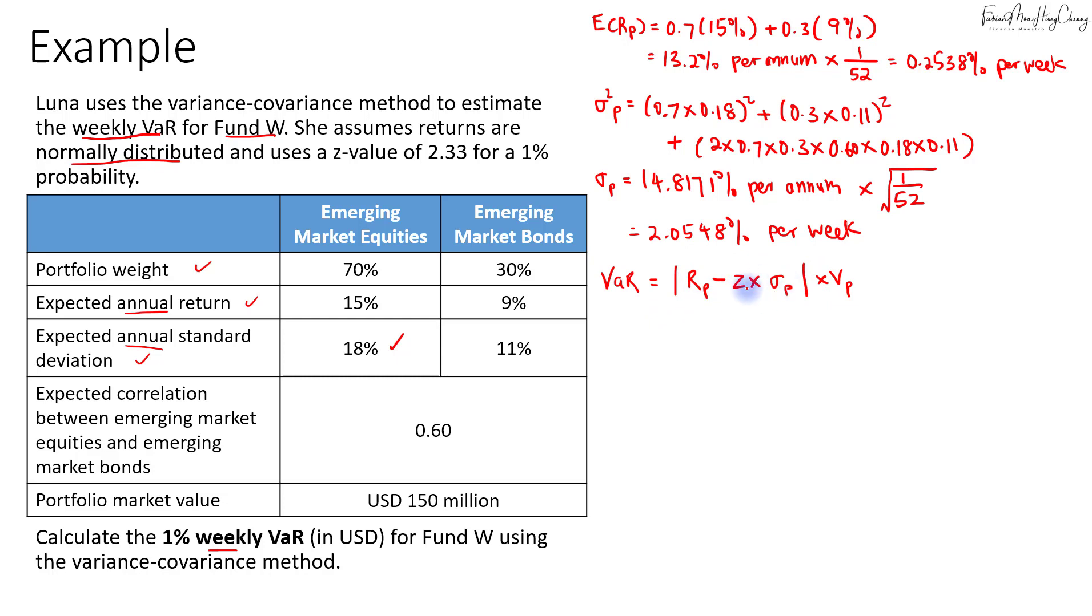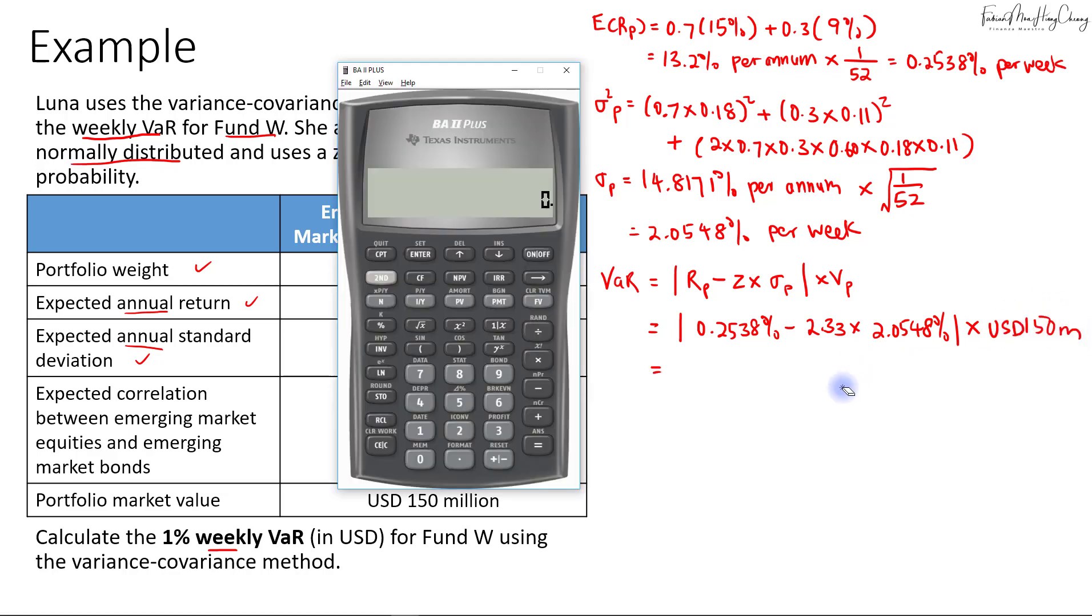That will be 0.2538% minus 2.33 times 2.0548%. Multiply that by 150 million. So 0.2538% minus 2.33 times 2.0548% equals about negative 4.5339%. Take the absolute sign.